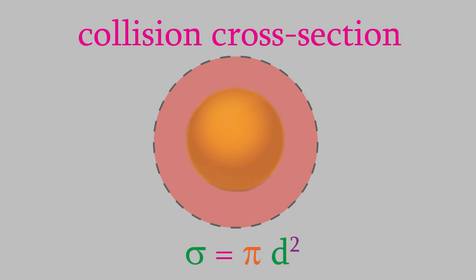So, whenever a B molecule enters this circle, it will collide with the A molecule. That means that the larger the circle is, the more likely that collisions will happen, which increases the likelihood that there will be a chemical reaction.